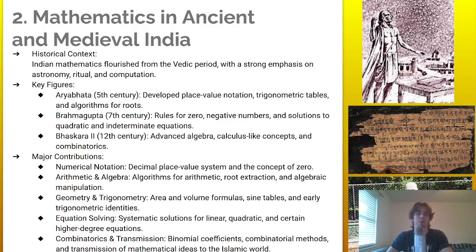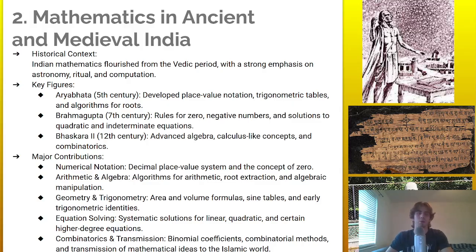Moving to ancient and medieval India: Indian mathematics flourished from the Vedic period, with a strong emphasis on astronomy, ritual, and computation. Key figures include Aryabhata, who developed place value notation, trigonometric tables, and algorithms for roots.